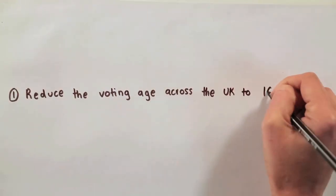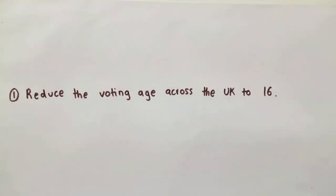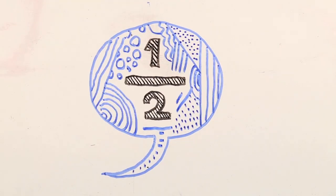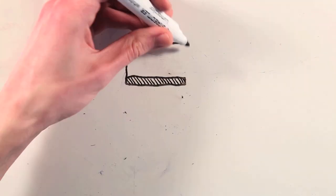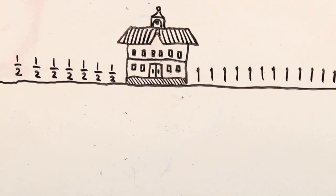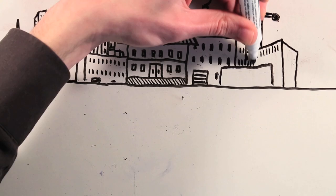1. Reduce the voting age across the UK to 16. Well half of the young people are still at school and they haven't contributed anything to society so I don't see why they should be telling the government what to do.